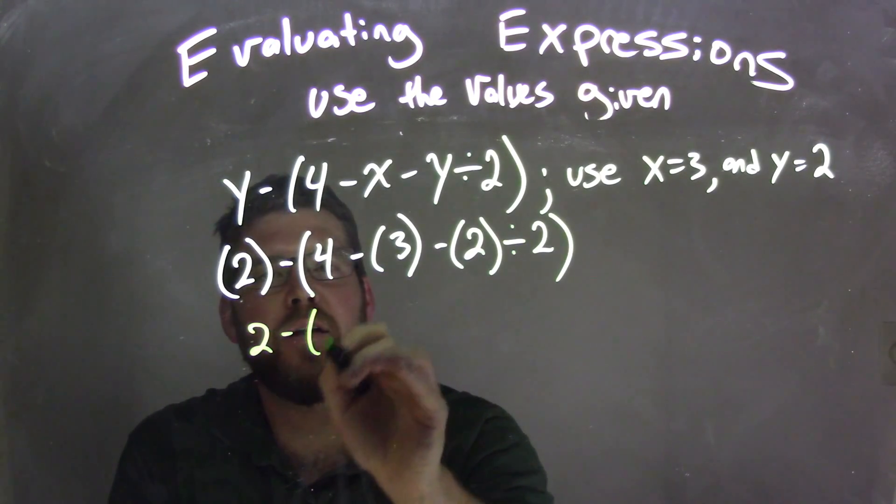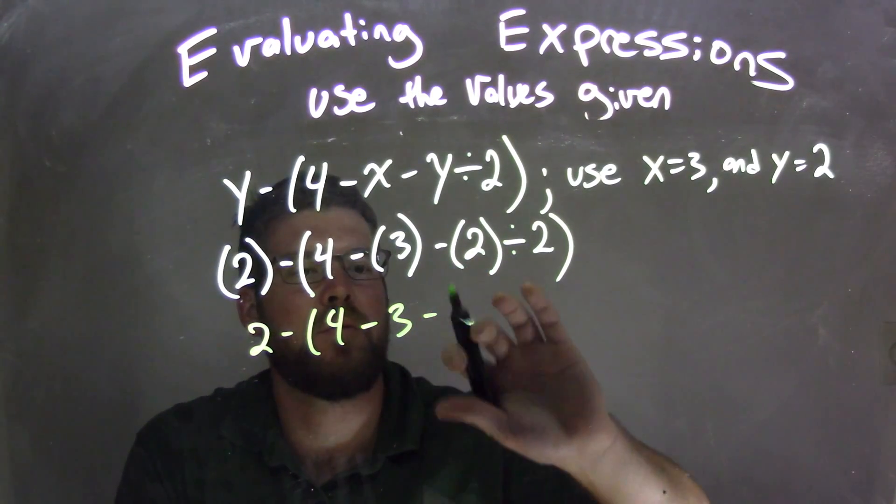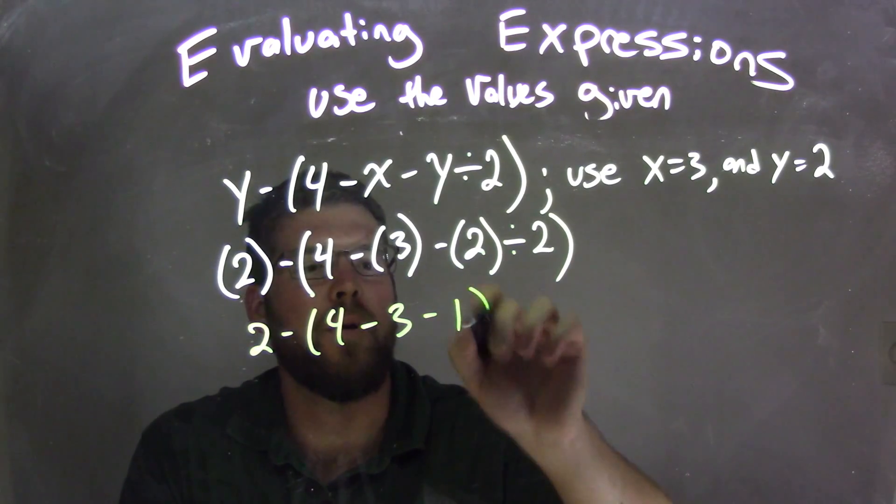So 2 is on the outside, 4 minus 3 minus, well, let's answer that, 1.